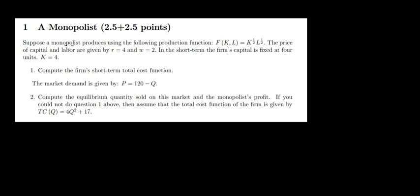Let's have a look at question one in this video. Suppose a monopolist produces using the following production function. The price of capital and labor are given by these values. In the short run, capital is fixed at four units.